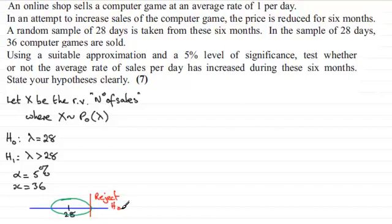Just going to write that in there. There's two ways that we can approach this type of problem. We can either work out what the probability is of getting more than 36, and if that is less than 5%, then we would reject the null hypothesis. The other way is to work out what the critical value would be.